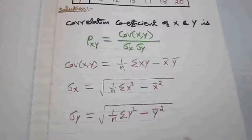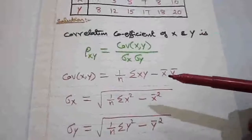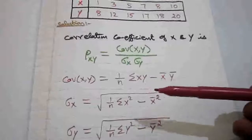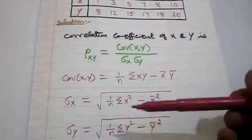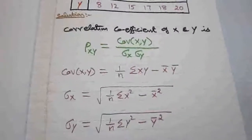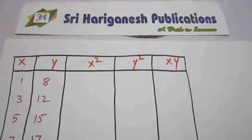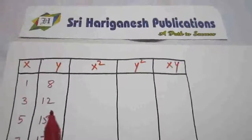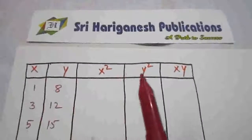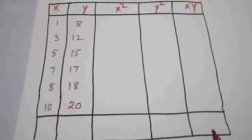From the given data, I want to find out x̄ and ȳ — the means of x and y — and the required summations. We need to form a table with columns: x, y, x², y², xy, and their summations.